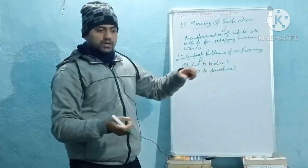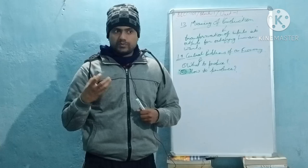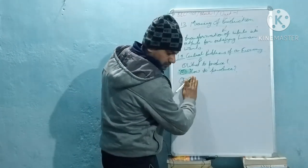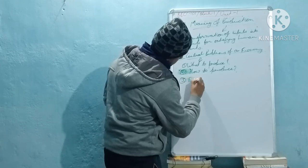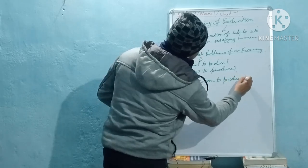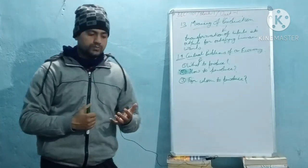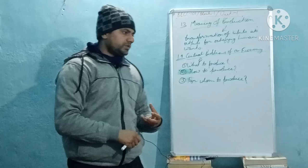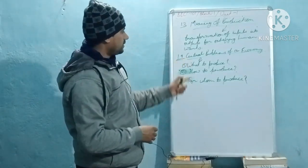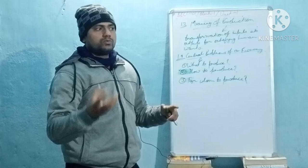'What to produce' means what people want and demand — only those products which people want and require are going to be produced. Then there is 'for whom to produce': whether we should produce products for households, individuals, or firms. These are the basic central problems of an economy: what to produce, how to produce, and for whom to produce.